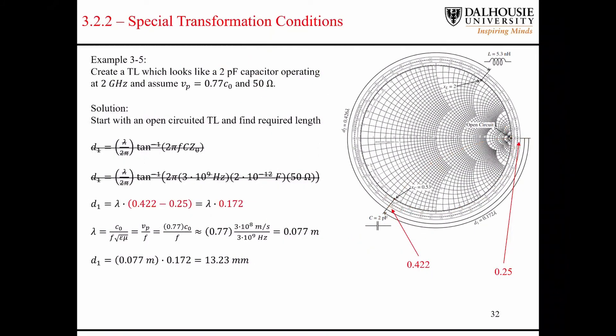So rather than using these equations that we used last time, we know just from the Smith chart, reading directly from the Smith chart, the amount of rotation that would be required to go from an open circuit to this constant reactance curve would be the difference between the readings that we see on the outside of the Smith chart. So we end up with the same value that we came to last time of 13.23 millimeters.